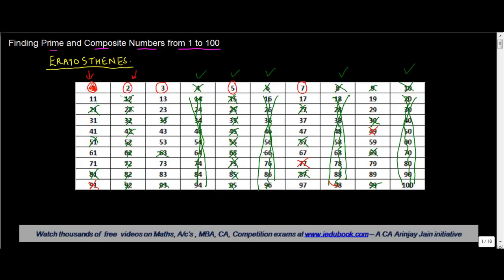Moving forward, then we have 11. 11 multiples: 22, 33, 44, 55, 66, 77, 88, 99. It's already gone.